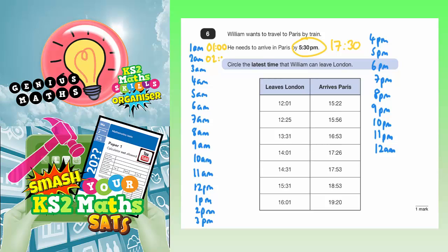2am is 0200 hours. 3am is 0300. 4am is 04. 5am is 05. 6am is the 6th hour of the day. 7am is the 7th hour of the day. 8am is the 8th hour of the day. 9am is the 9th hour of the day. 10am is the 10th hour of the day. 11am is the 11th hour of the day.